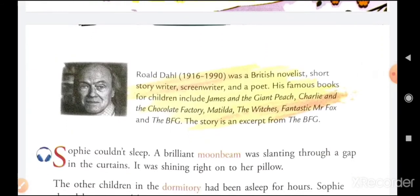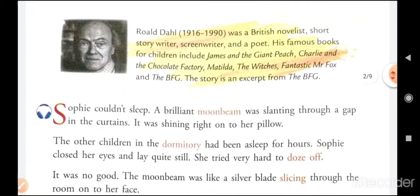Roald Dahl, 1916 to 1990, was a British novelist, short story writer, screenwriter, and a poet. His famous books for children include James and the Giant Peach, Charlie and the Chocolate Factory, Matilda, The Witches, Fantastic Mr. Fox, and the BFG. The story is an excerpt from the BFG.